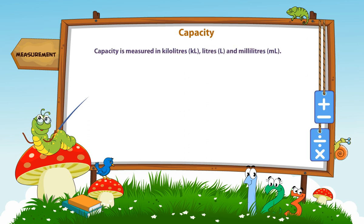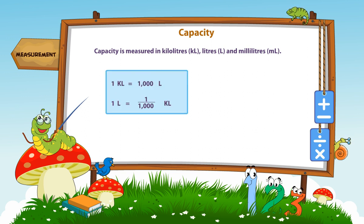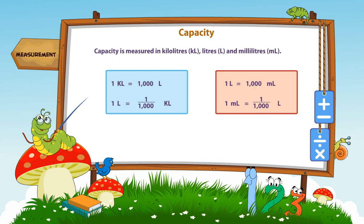Capacity is measured in kilolitres, litres, and millilitres. 1 kilolitre is equal to 1,000 litres. 1 litre is equal to 1/1,000 kilolitre. 1 litre is equal to 1,000 millilitres.